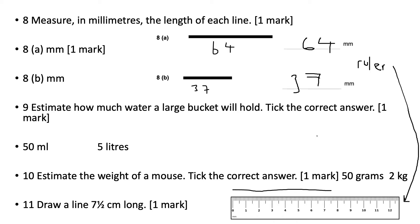Question number nine, estimate how much water a large bucket can hold, tick the correct answer: 50 milliliters or 5 liters. It's a large bucket of water so we will assume that it can hold 5 liters because 50 milliliters is pretty small actually.